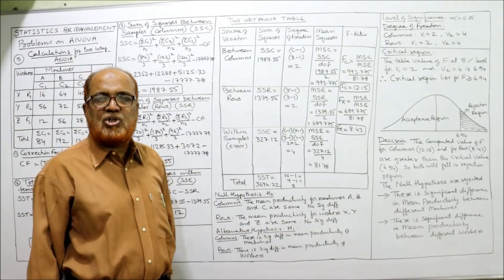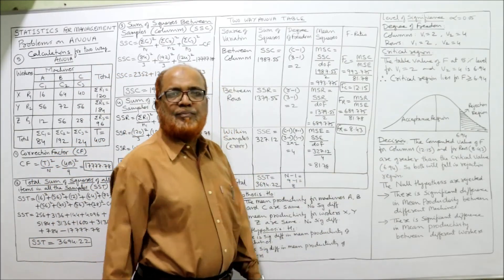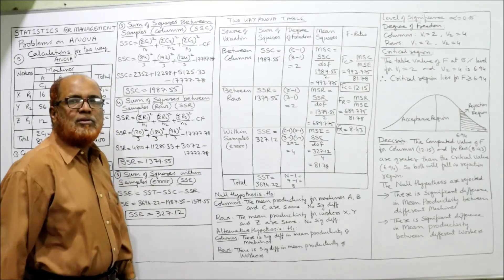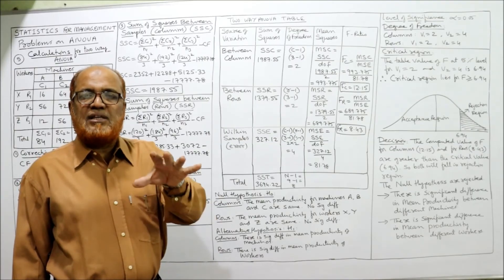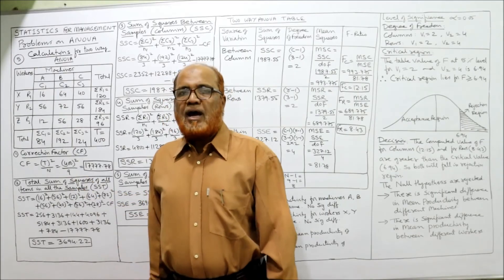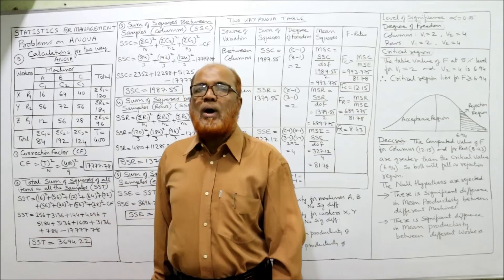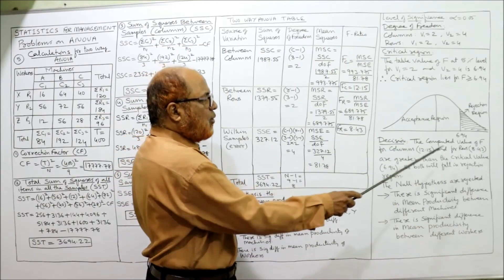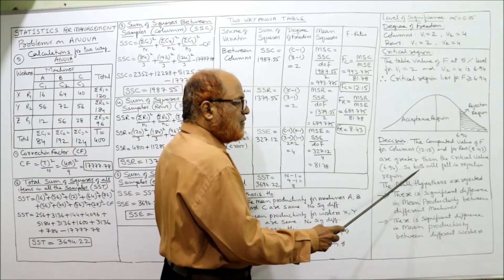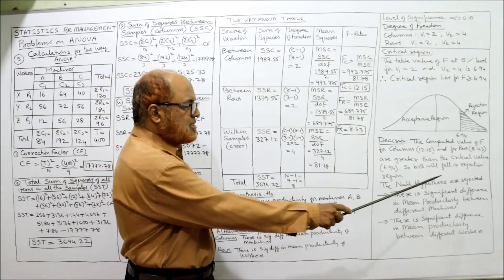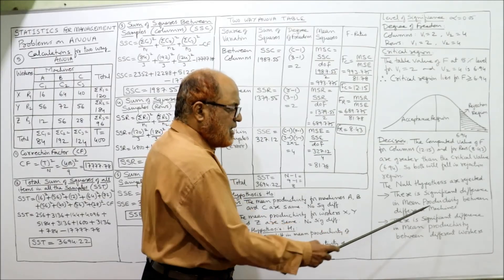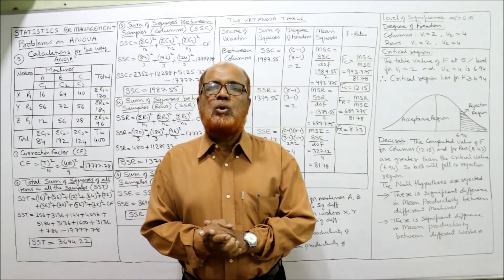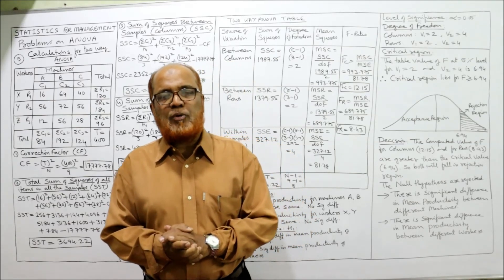We reject the null hypotheses and accept the alternative hypotheses. Conclusion: the computed F for columns (12.15) and for rows (8.43) both exceed the critical value of 6.94. Therefore, there is significant difference in mean productivity among the different machines, and there is significant difference in mean productivity among the different workers. This completes the first problem on two-way ANOVA.